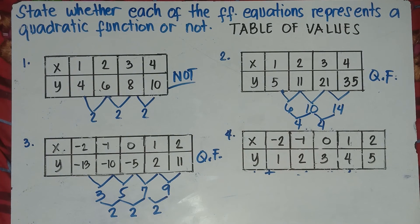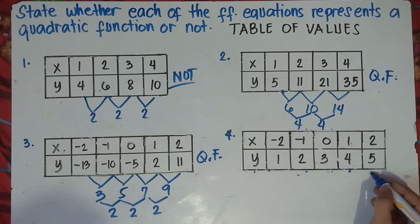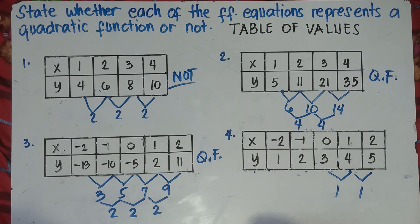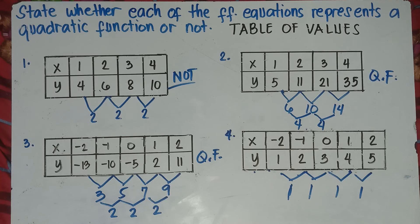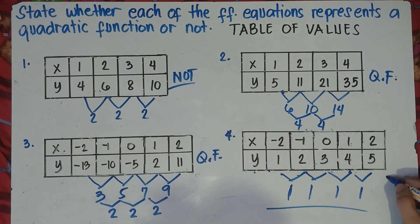Alright, let's try number 4. Subtracting right to left: 5 minus 4 is 1, 4 minus 3 is 1, 3 minus 2 is 1, 2 minus 1 is 1. They all have the same first difference of 1, so this function is a linear function — not a quadratic function.